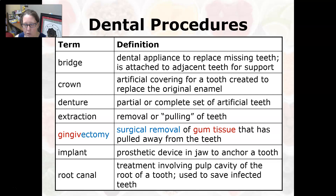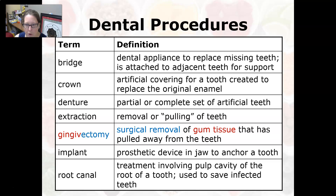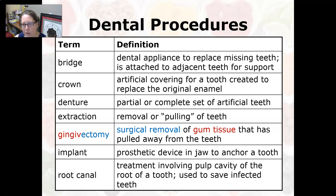A bridge is attached to adjacent teeth for support, bridging a gap between two teeth. A crown is an artificial covering for a tooth created to replace the original enamel. A denture is a partial or complete set of artificial teeth. An extraction is a removal or pulling of teeth.